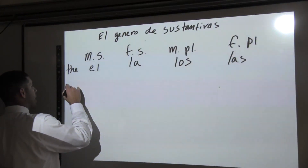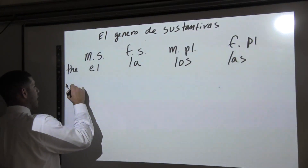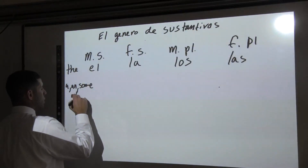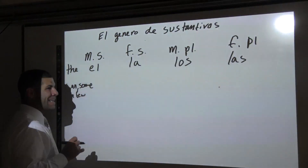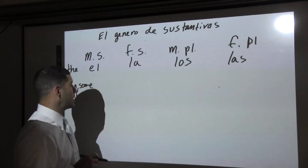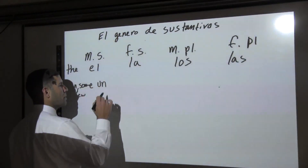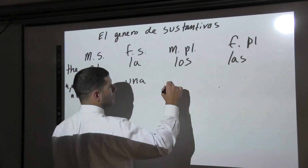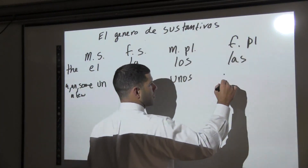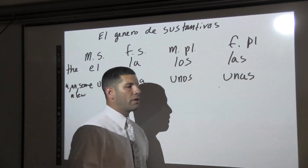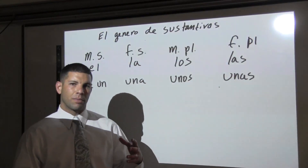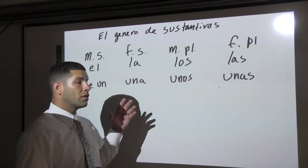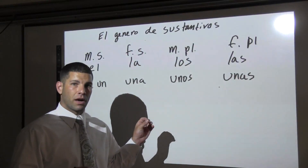We also have the indefinite articles — 'a,' 'an,' and 'some' in English — which appear in Spanish as un, una, unos, and unas. It's a good way right away to identify what gender something is, just by looking at the definite or indefinite article in front of it.